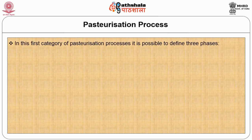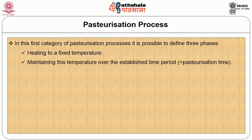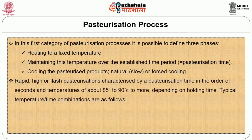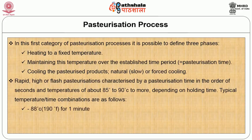In the first category of pasteurization process, three phases can be defined: heating to a fixed temperature, maintaining this temperature over the established time period, and cooling the pasteurized product naturally or by forced cooling. Rapid high or flash pasteurization is characterized by a pasteurization time in the order of seconds and a temperature of about 85°C to 95°C or more, depending on the holding time. Typical temperature-time combinations are: 88°C for 1 minute, 100°C for 12 seconds, and 121°C for 2 seconds.